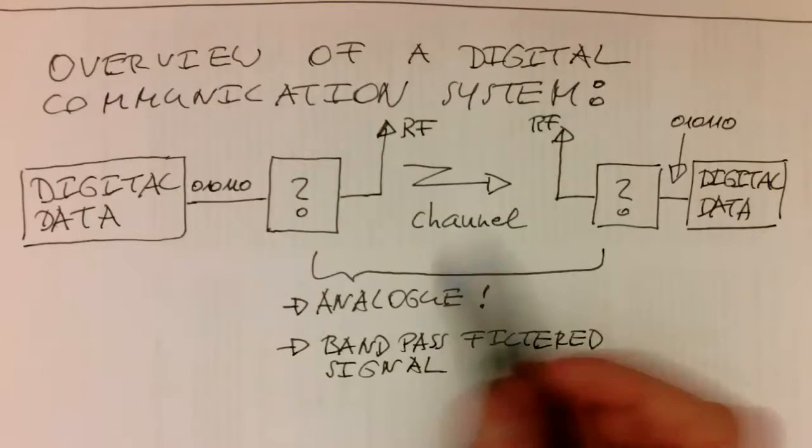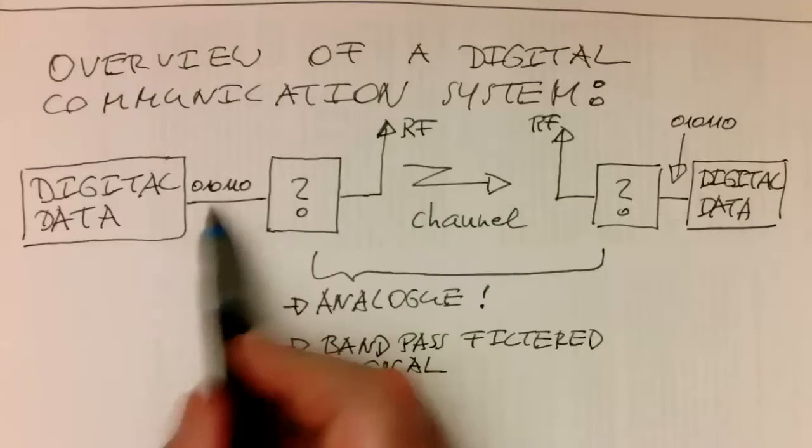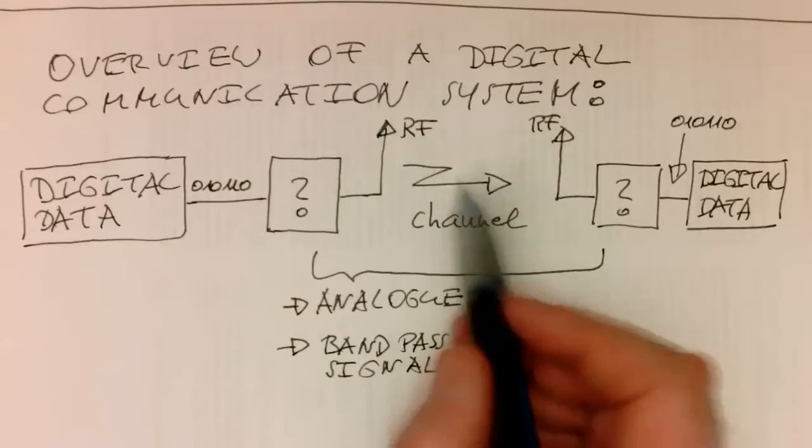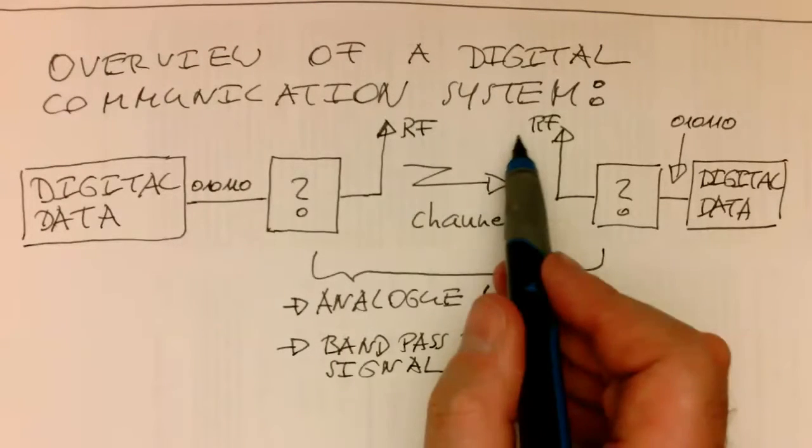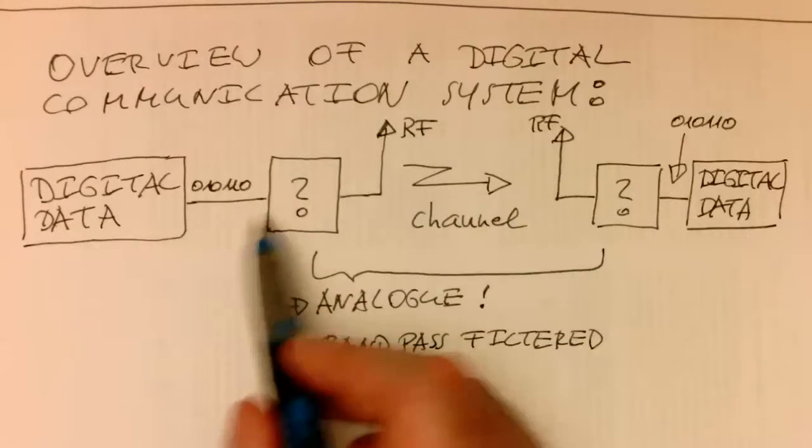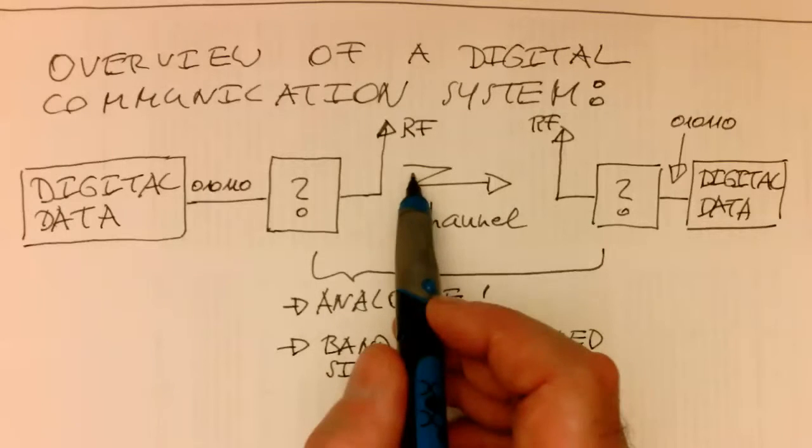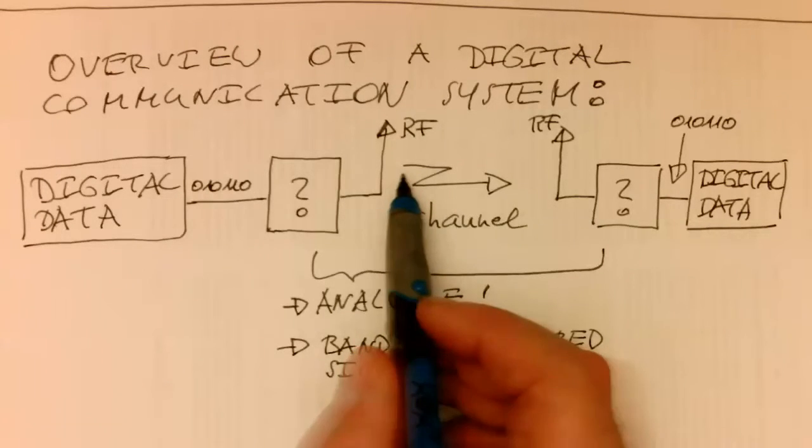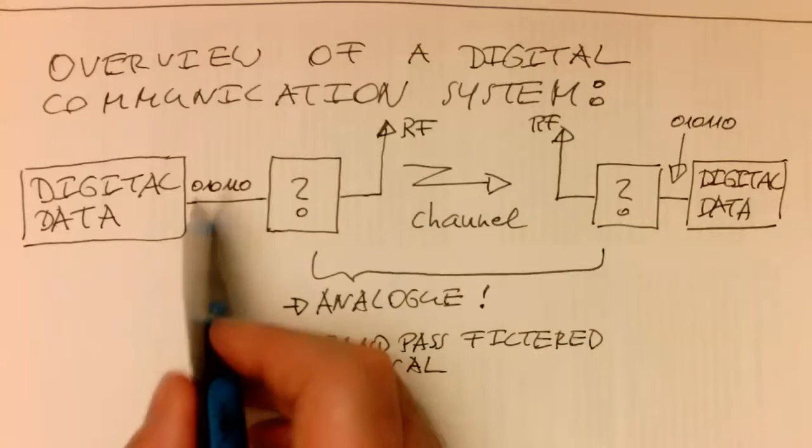And the other problem is obviously this is a digital stream here. And this is an analog band pass signal. So how can we do this timing wise? These are obviously totally different types of signals here. This is a binary stream, which also quantized in time.